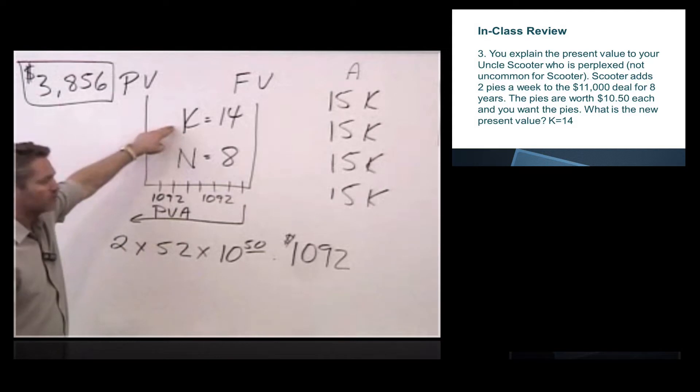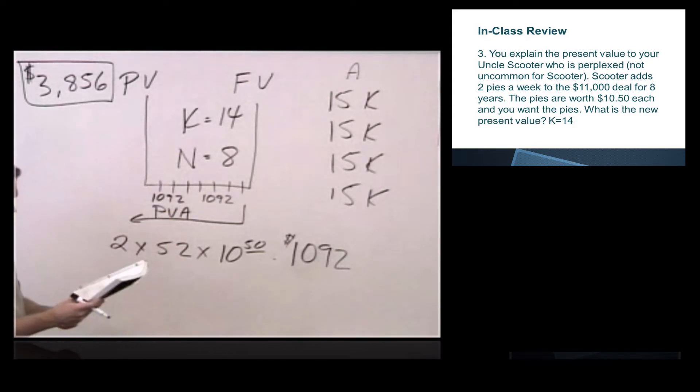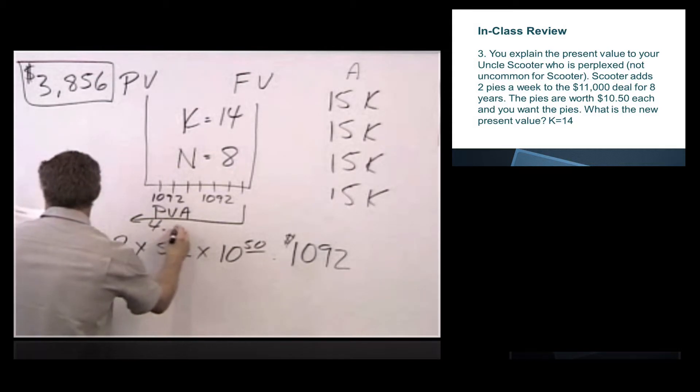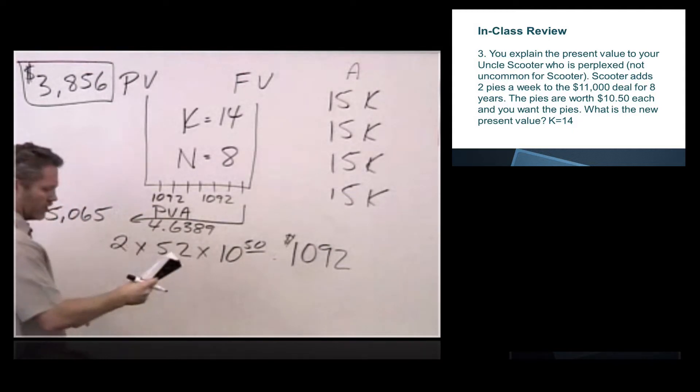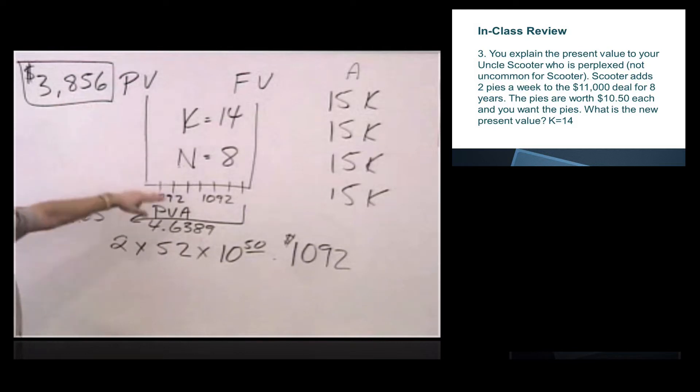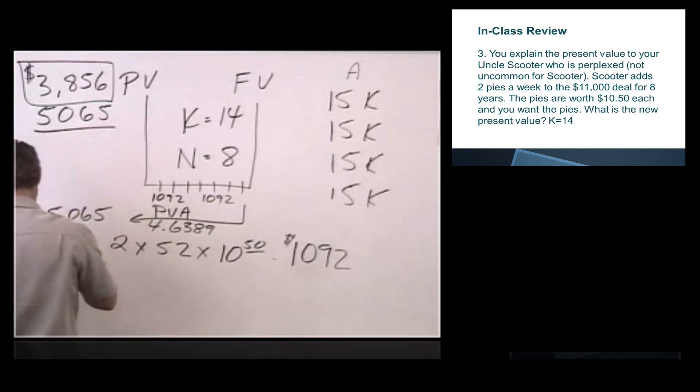So I am going to discount back to today using present value of an annuity. Present value of annuity, K equals 14, N equals 8. I'm going to look that up on the chart, and that is 4.6389 times 1,092 gets us a value of the pies of 5,065. So in this deal, we're getting the pies and the $11,000 eight years from now. The $11,000 eight years from now is worth 3,856. I am adding the value of my pies, 5,065.